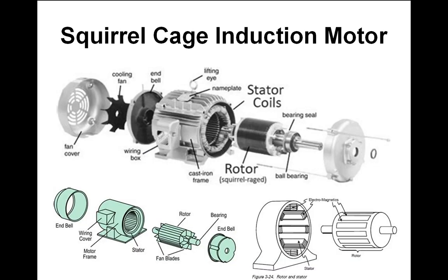Next — squirrel cage induction motor. You've got a ring on each side connected by wires. When the three-phase electromagnetic field orbits around, a current is induced into the squirrel cage, which pushes current through the connecting lines and generates a magnetic field. You then have two magnetic fields that spin the rotor around. The huge advantage is the rotor has absolutely no electrical connection whatsoever.